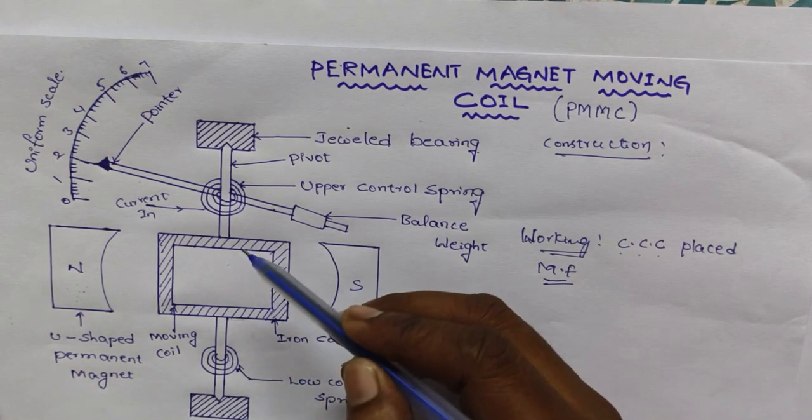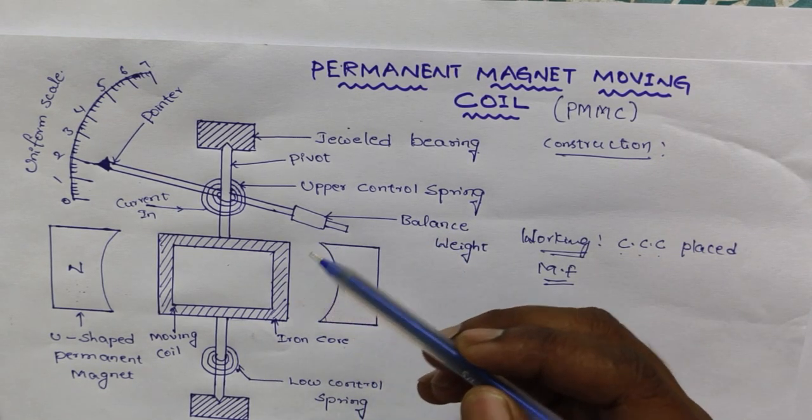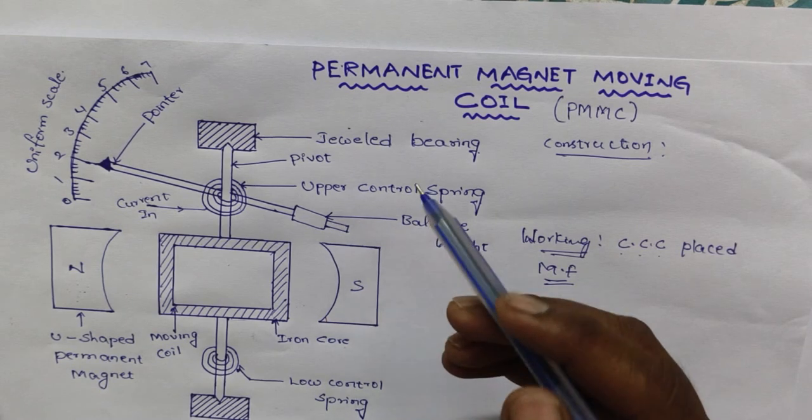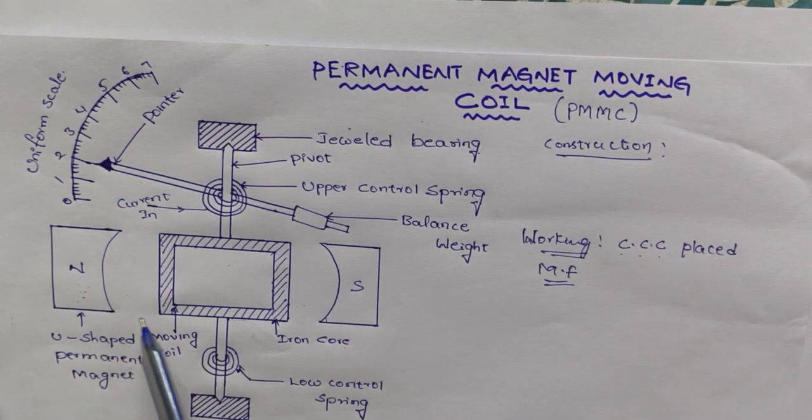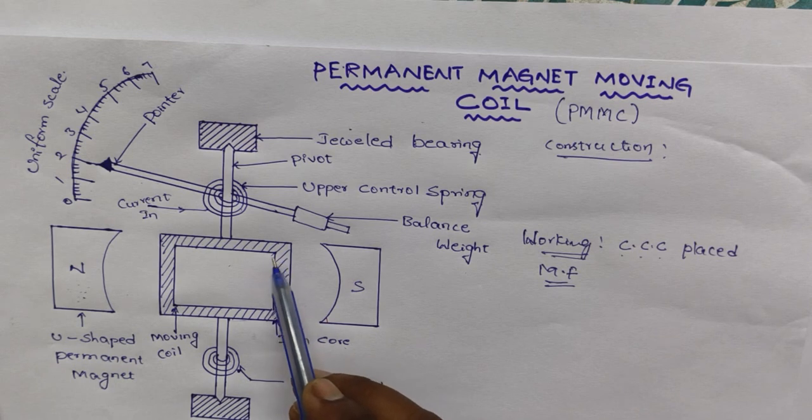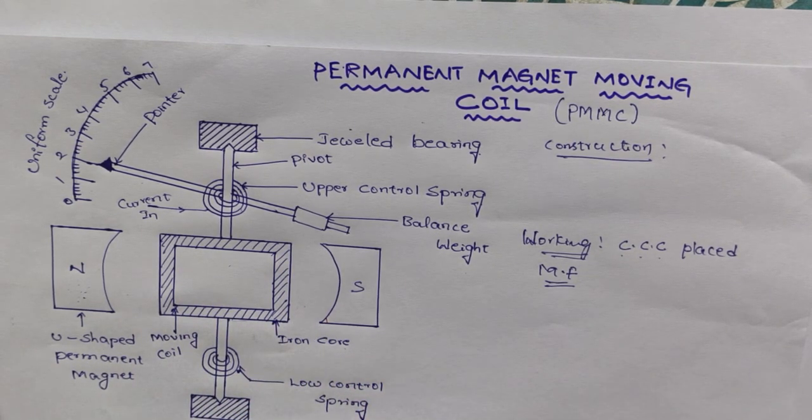The springs provide controlling torque. Controlling torques are two types: spring control and gravity control. Here N S, these two are U-shaped permanent magnets and between this is a rectangular coil. This rectangular coil we place between the two permanent magnets.